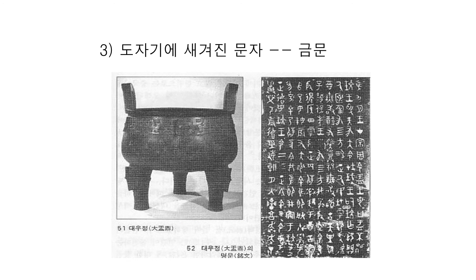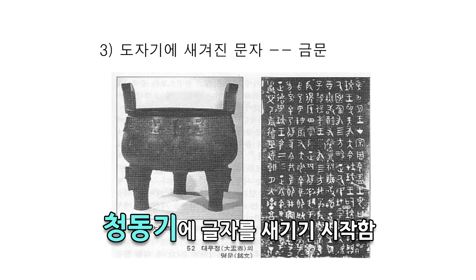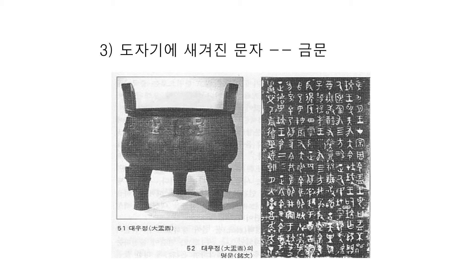그 다음에 공책이 바뀝니다. 짐승의 뼈에서 청동기로, 청동기 문물이 시작되면서 짐승의 뼈에 새기기엔 공간이 부족하고 새기기도 힘들죠. 또 그 사이에 글자의 수가 많이 늘어났어요. 그래서 공책이 청동기로 바뀝니다. 오른쪽에 보면 이게 대우정이라는 굉장히 많은 글자가 새겨진 명문인데요. 갑골문과 비교해보면 청동기에 새겼기 때문에 글자가 두툼해지고 동글동글해진 특징이 있습니다.